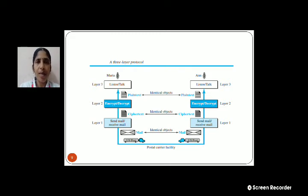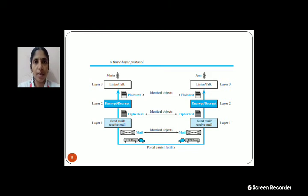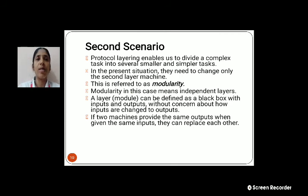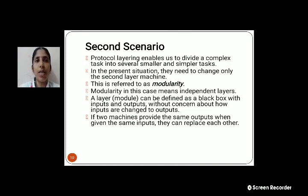In the Send Mail or Receive Mail layer, both sides send messages. The message is encrypted by the sender and decrypted by the receiver. The receiver can also send an encrypted message and the sender can decrypt — the communication should be identical in both directions. The third layer has plain text, and both texts should be the same. In this scenario, we divide this complex task into smaller tasks. Only in the present situation, they need to change the second layer machine.